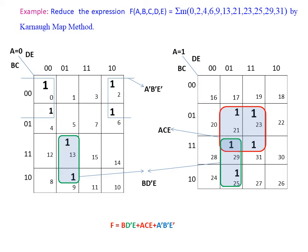Now, 0 is adjacent with 16, 4 is adjacent with 20, 12 is adjacent with 28, 8 is adjacent with 24. Also, 13 and 29 are adjacent, and 9 and 25 are adjacent. Since they are in the same positions, both are grouped into single cells.